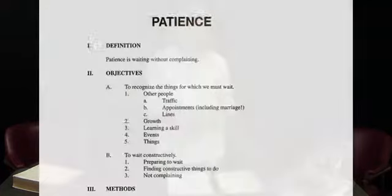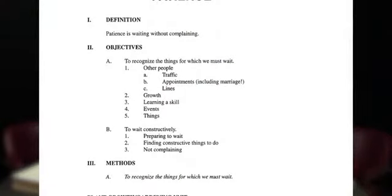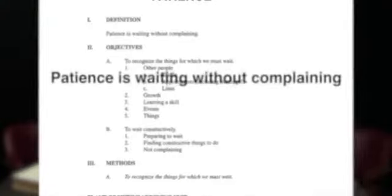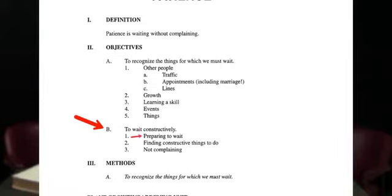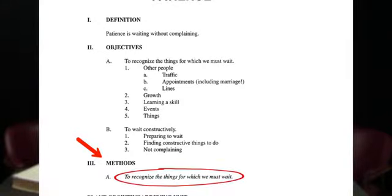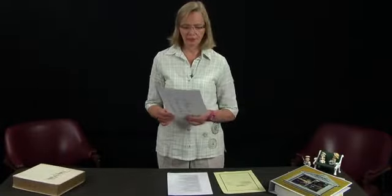So now what I've got left is just the patience unit. So now this is where the first page of the unit actually does apply. This is about the only time we do something in a specific sequential order when we are starting the new character trait. On your very first white page of your patience unit, you're going to have the definition: patience is waiting without complaining.